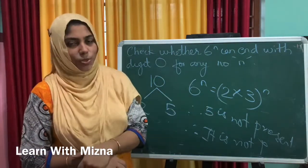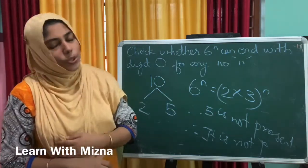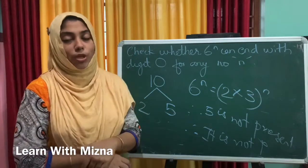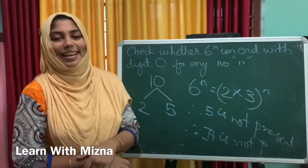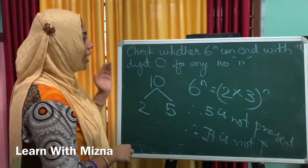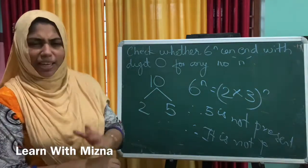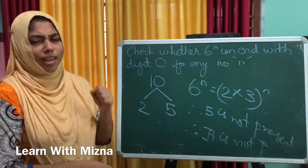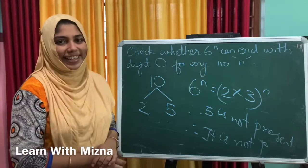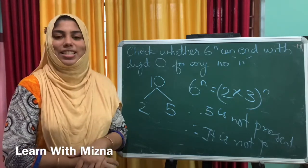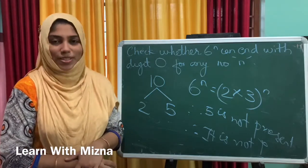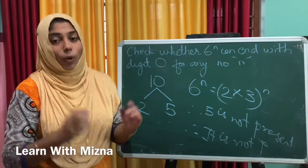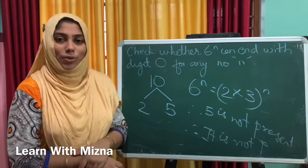6 is 2 × 3, so 6 raised to n is 2 raised to n × 3 raised to n. For a number to end in 0, it needs both 2 and 5 as prime factors, but 5 is not present. So this question is answered. That is our second exercise, almost completed.